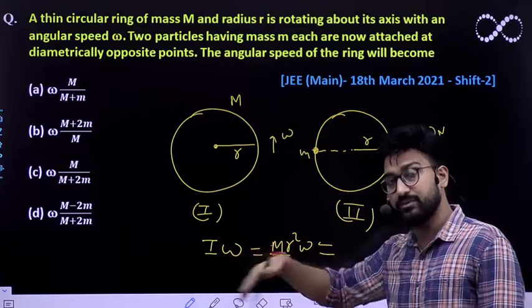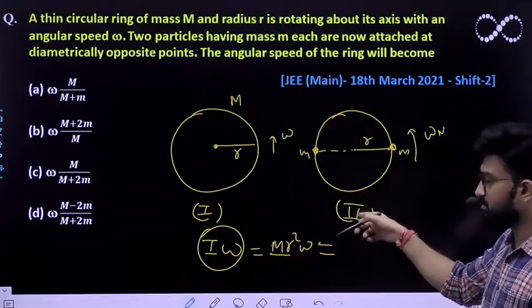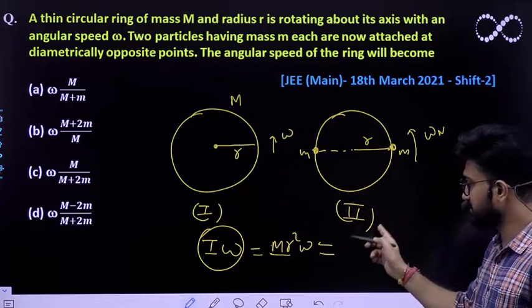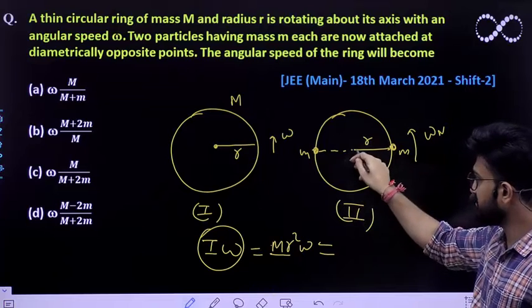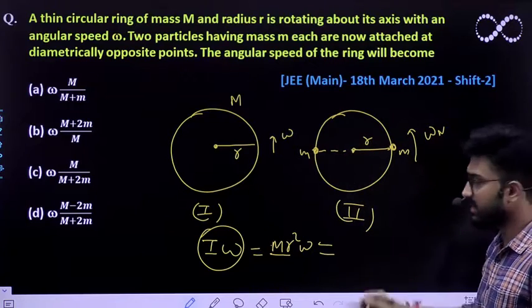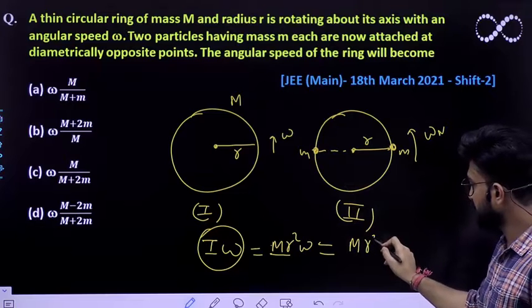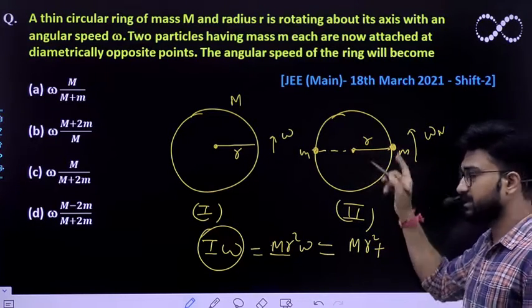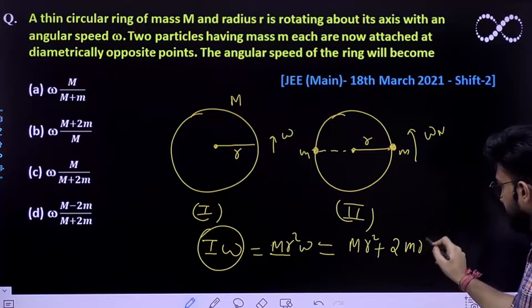This must be equal to - because angular momentum is conserved - the angular momentum in the second setup. In this case, moment of inertia would be MR square plus, because there are two masses at distance r, it would be twice of mr square.